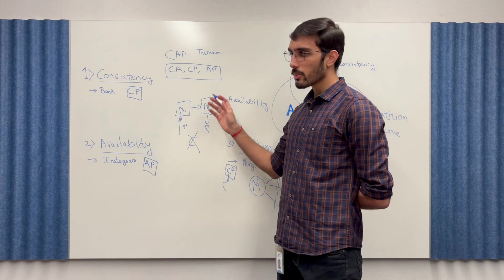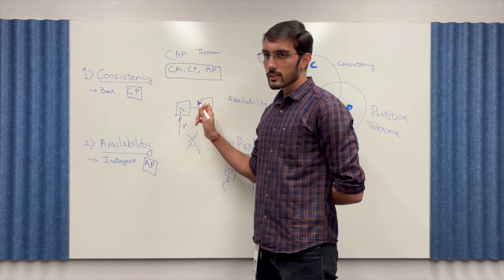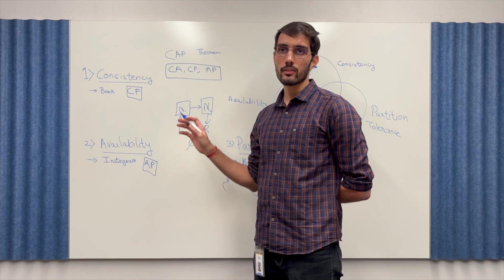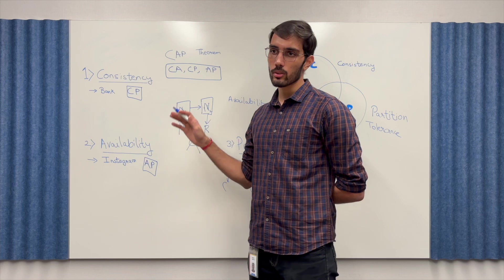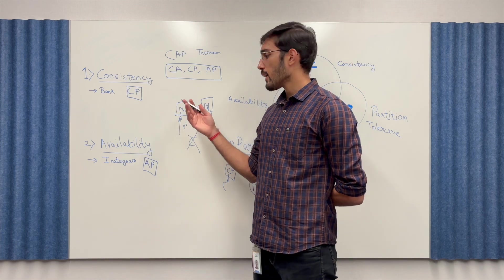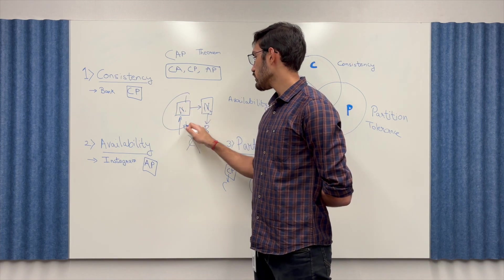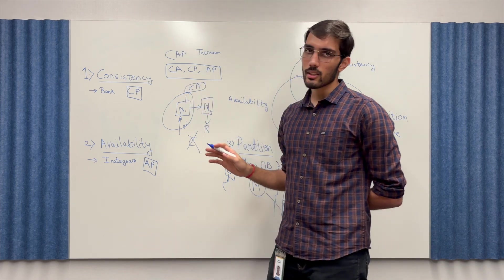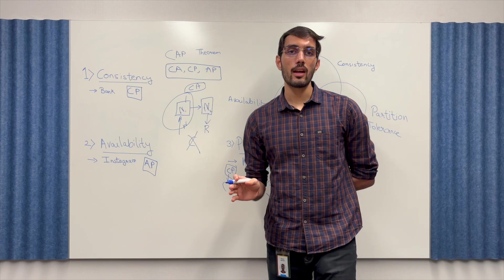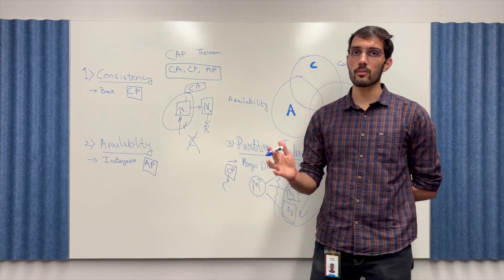This is a simple example which says that only CA is possible when you have just a single node and on that node you are allowing both reads and writes and that is only when you can make a CA system practically. So essentially for a distributed system having CA is not practically possible.